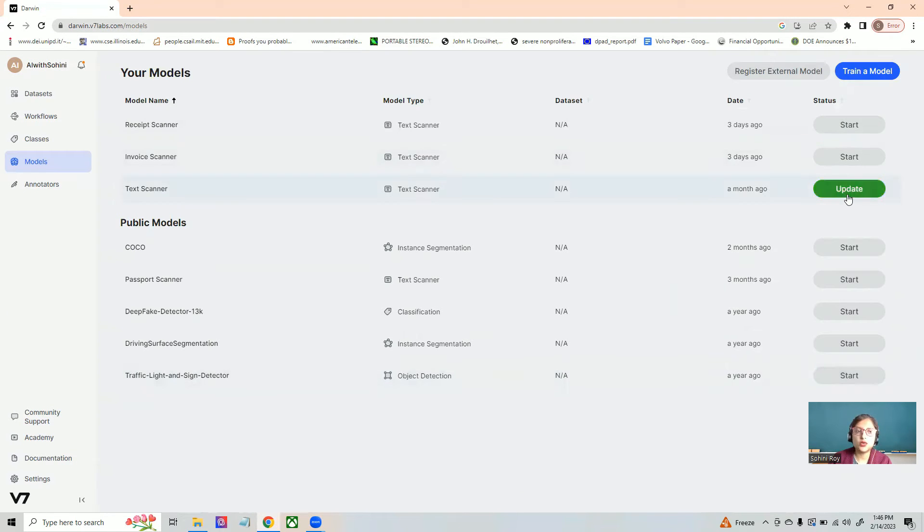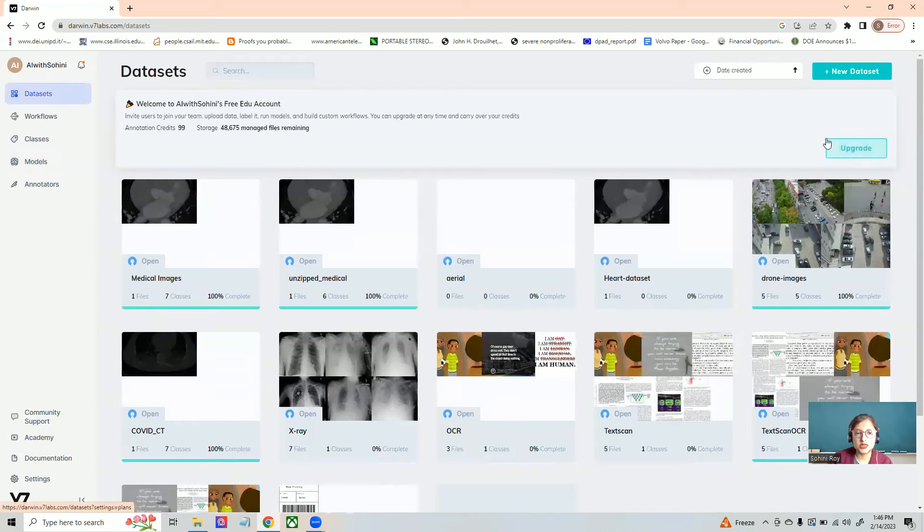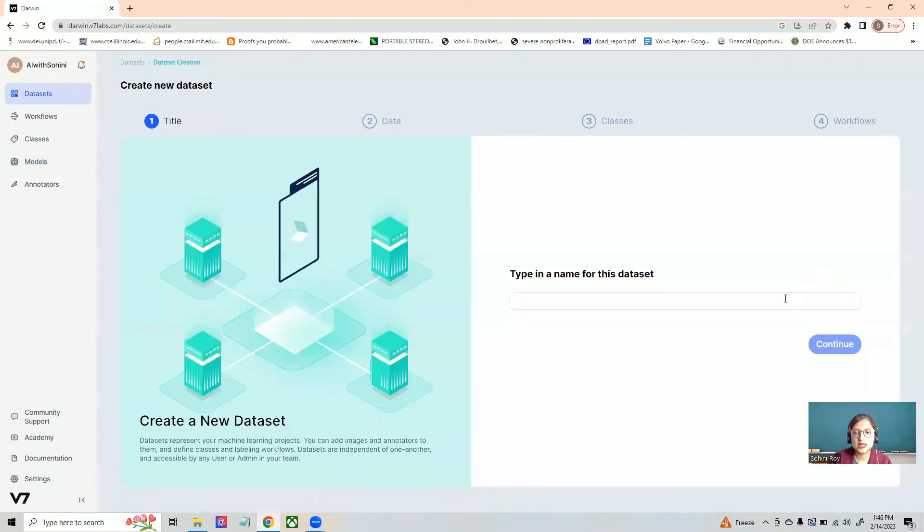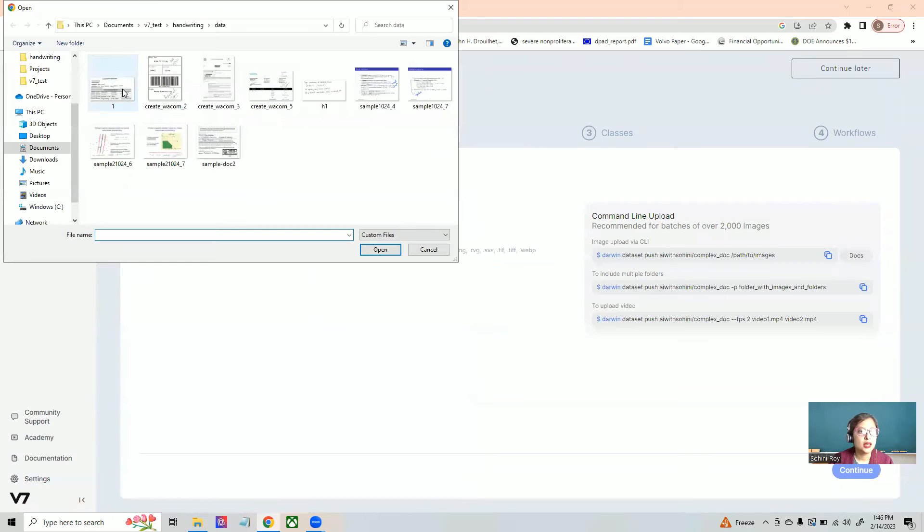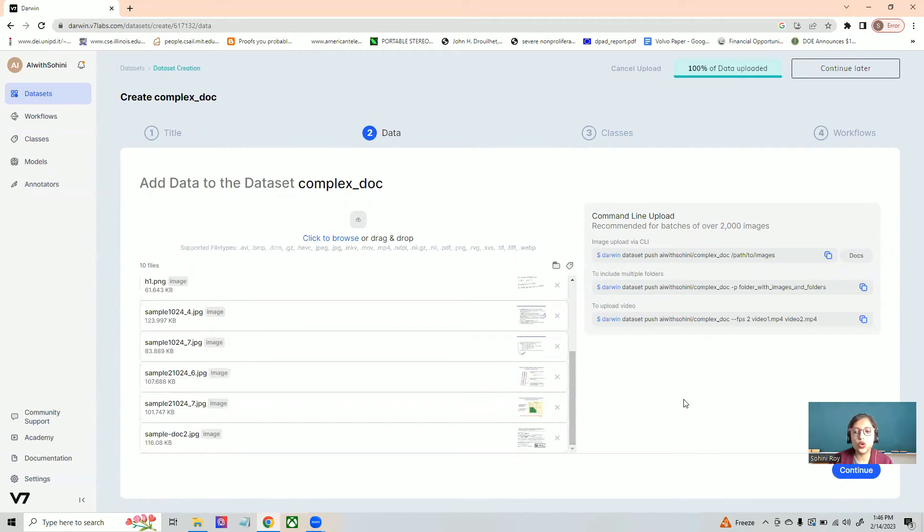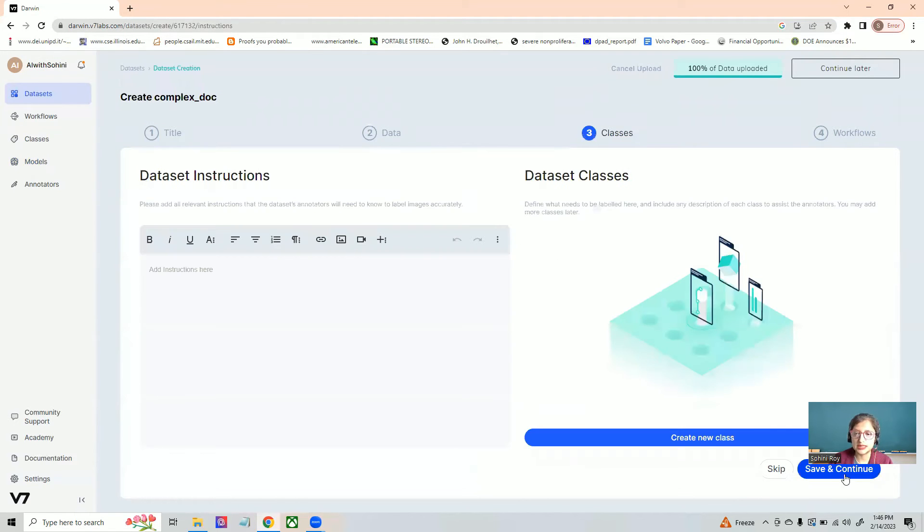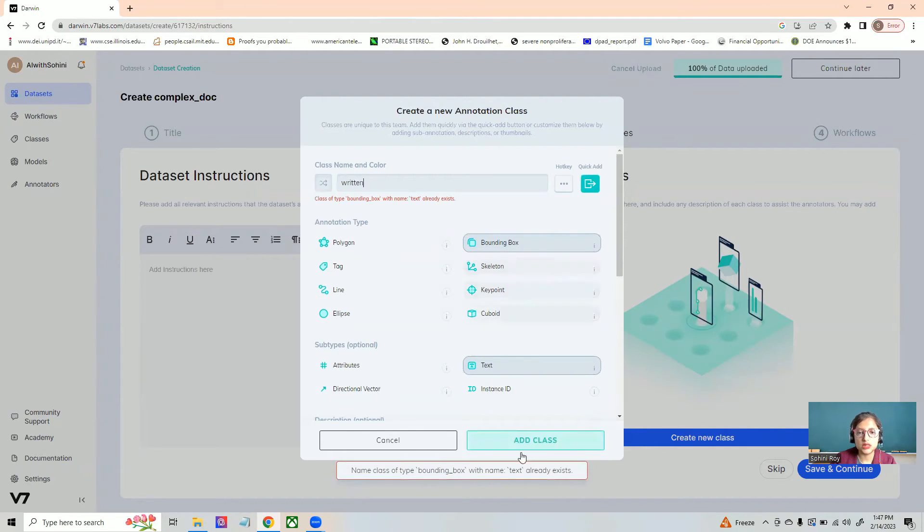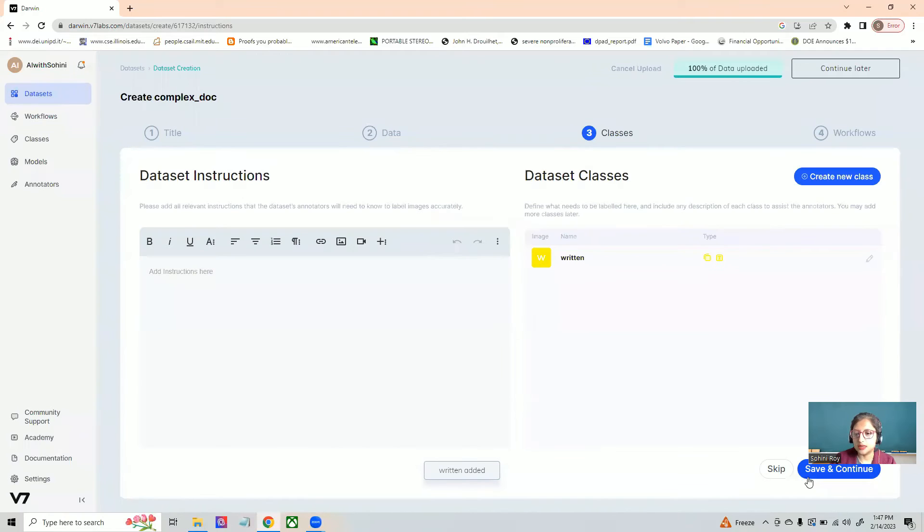Okay, now that I know that my model is running, let's create a new data set. So first off, let me create a new data set. And here I'm calling it complex doc. And I say continue. And I'm gonna send all of the images to it with a goal to specifically be able to extract all the different kinds of text in this particular data set. So if I want to create a new class, let's say I call it written with the bounding box and text, and I added, okay, and then I say the basic workflow.